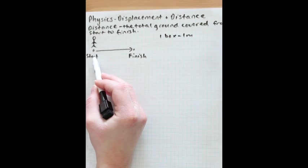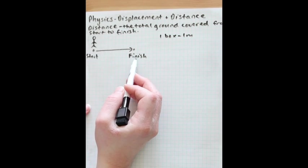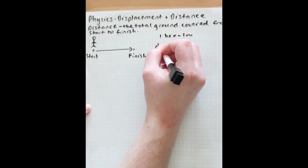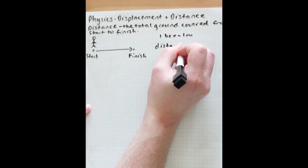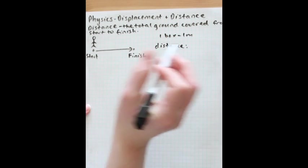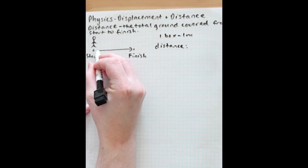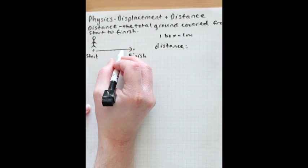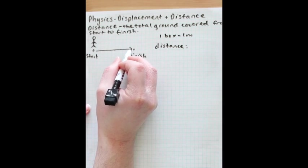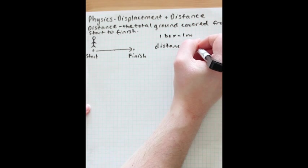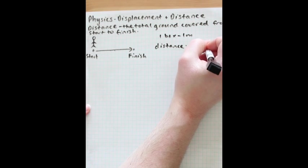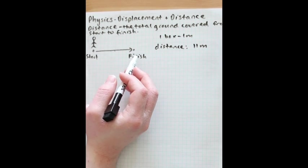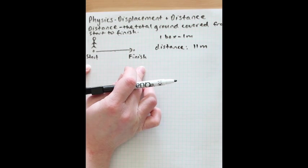Because if they start at this point and finish at that point, we would say the distance they walked would be eleven meters, because that's the total ground that they covered from start to finish.